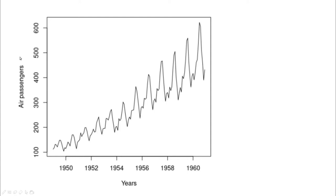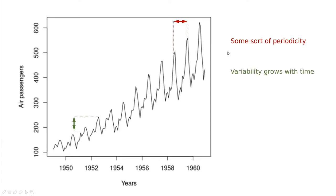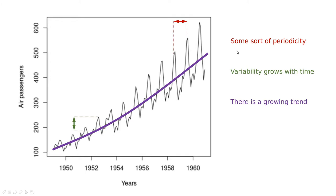Let me show you this example. This is the very famous dataset showing the number of fare passengers versus the years from the 1950s to the late 1960s. There is some periodicity — probably related to the fact that in summer more people took the plane than in winter. You can also see that variability grows in time, and there is a growing trend: the number of passengers on average is increasing with time.